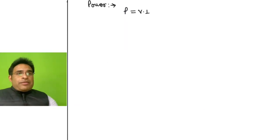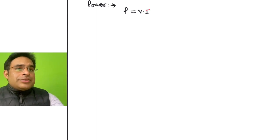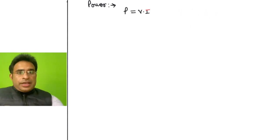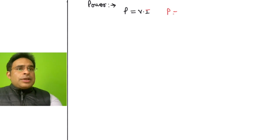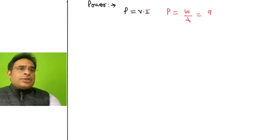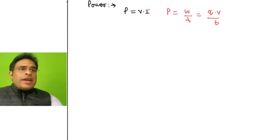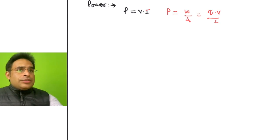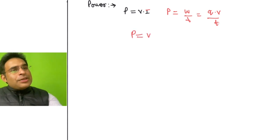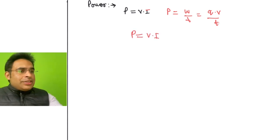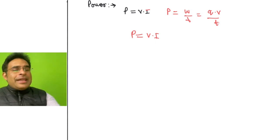To calculate power: P = V into I. We derived this as P = W/T, where W = Q × V, so P = (V × Q) / T. Since Q/T = current I, we get P = V into I. This is the formula for power.